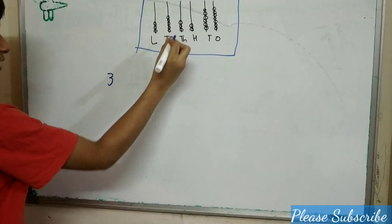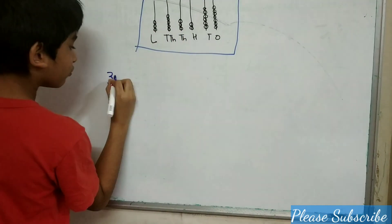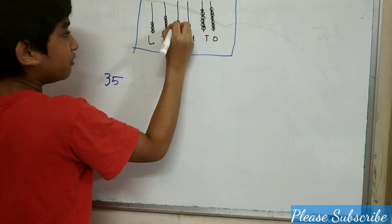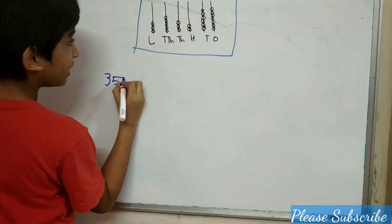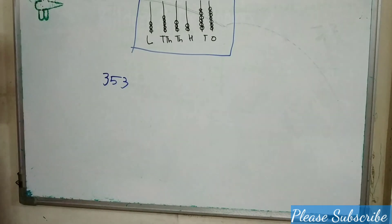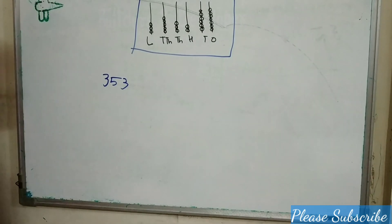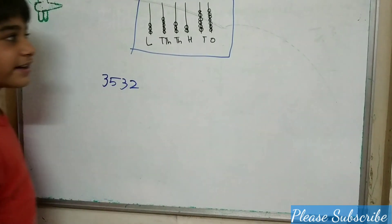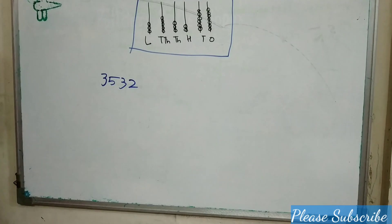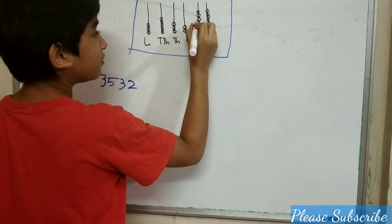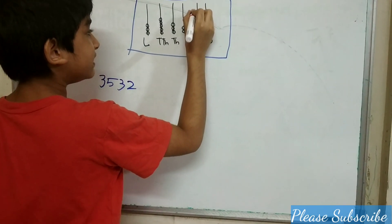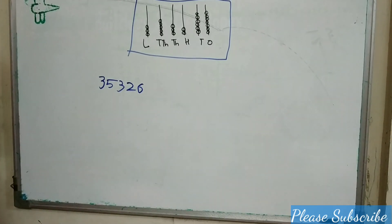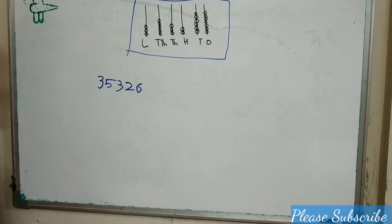5 beads in the ten-thousands row, so we write 5 here. 3 beads in the thousands row. 2 beads in the hundreds row. 6 beads in the tens row.